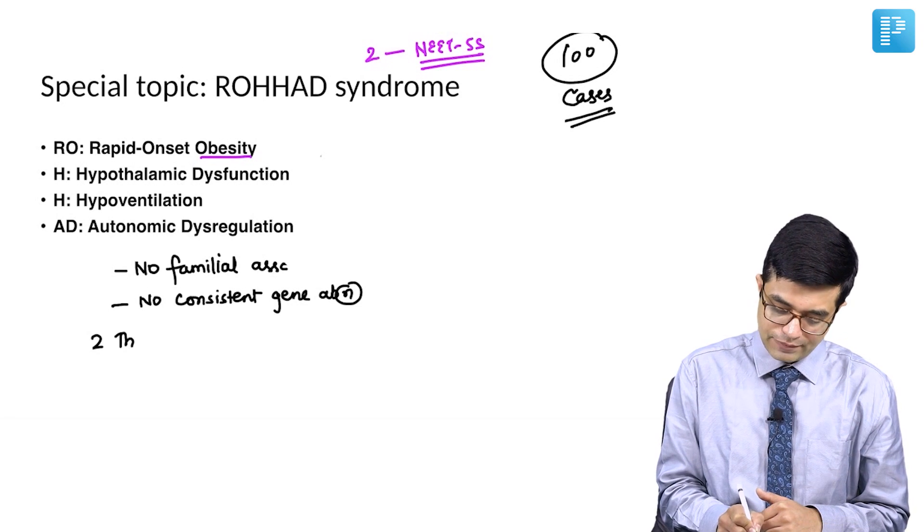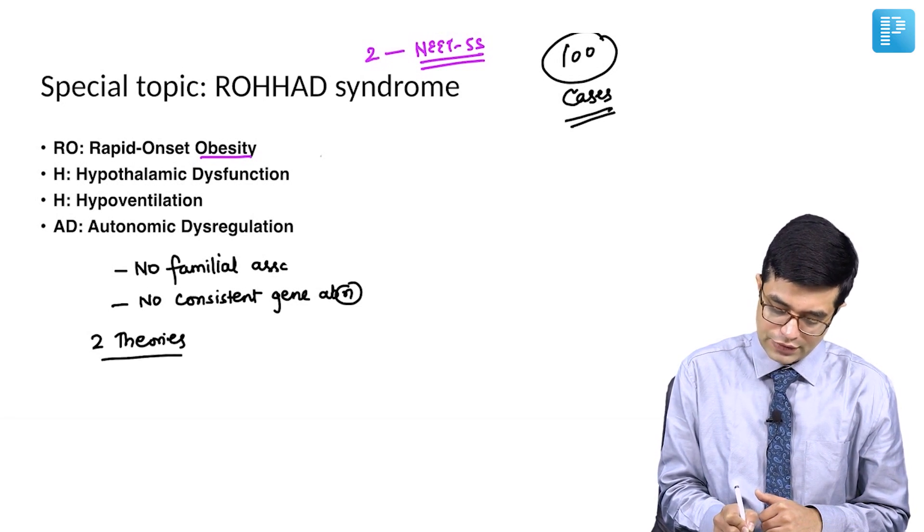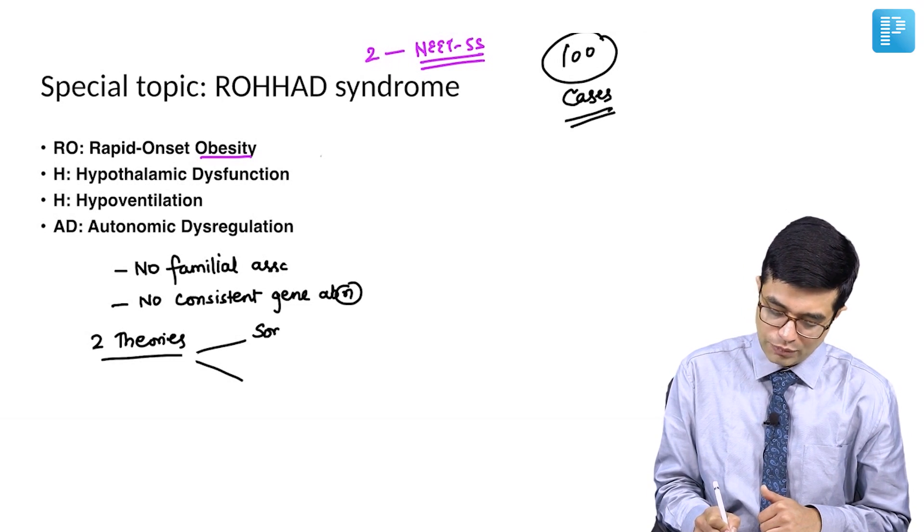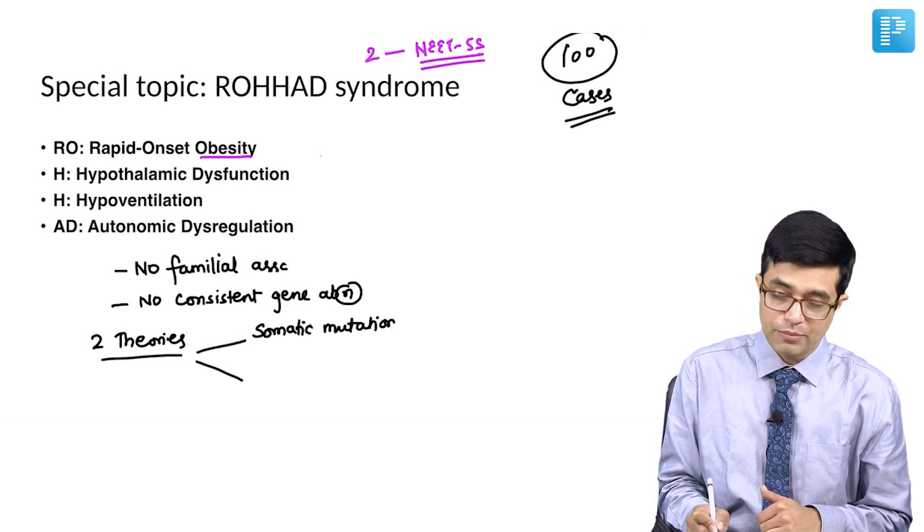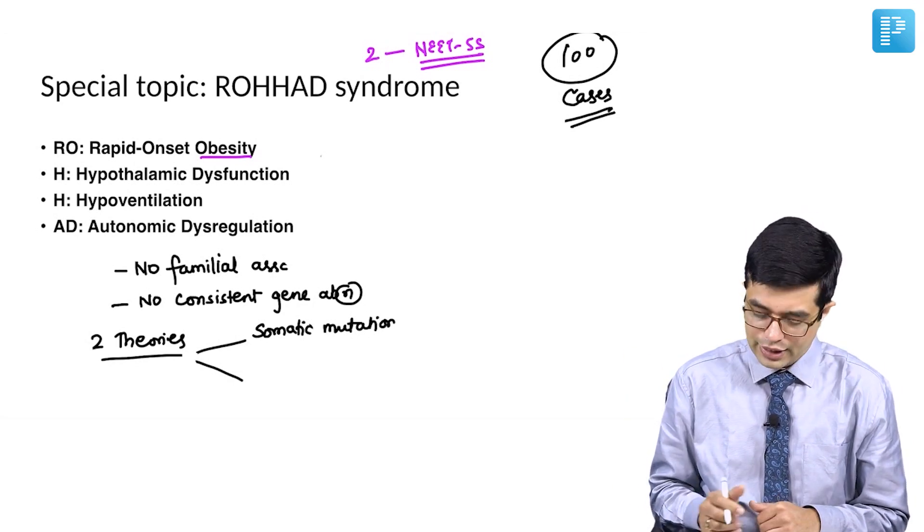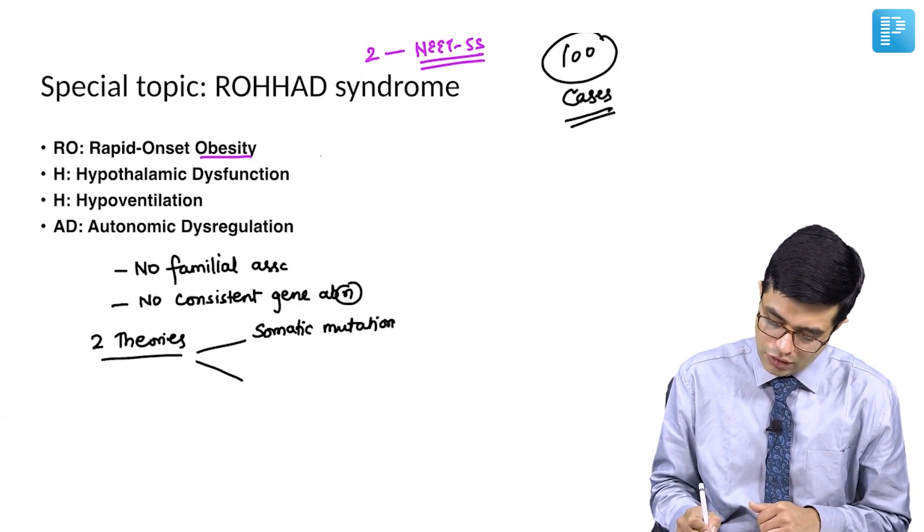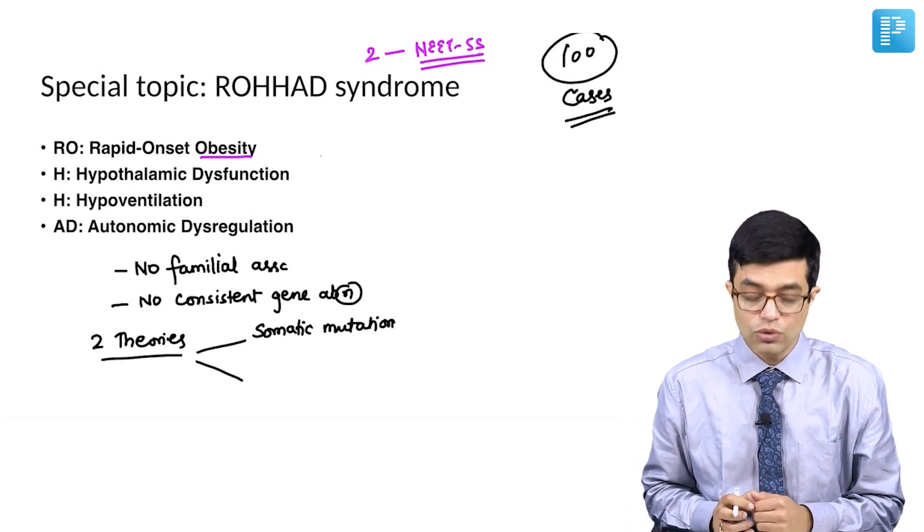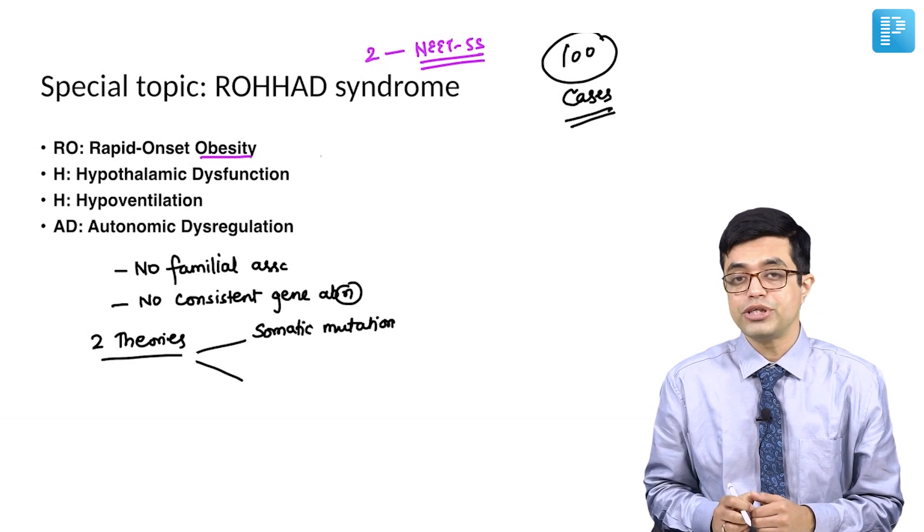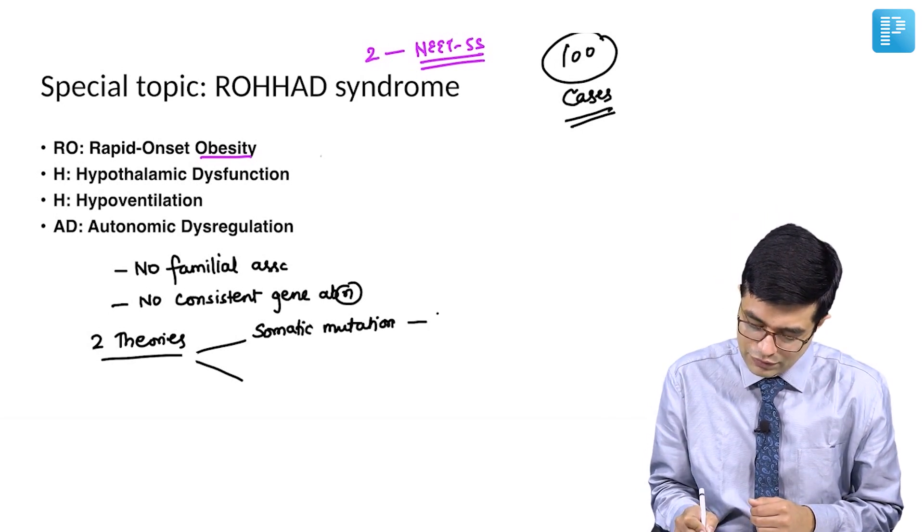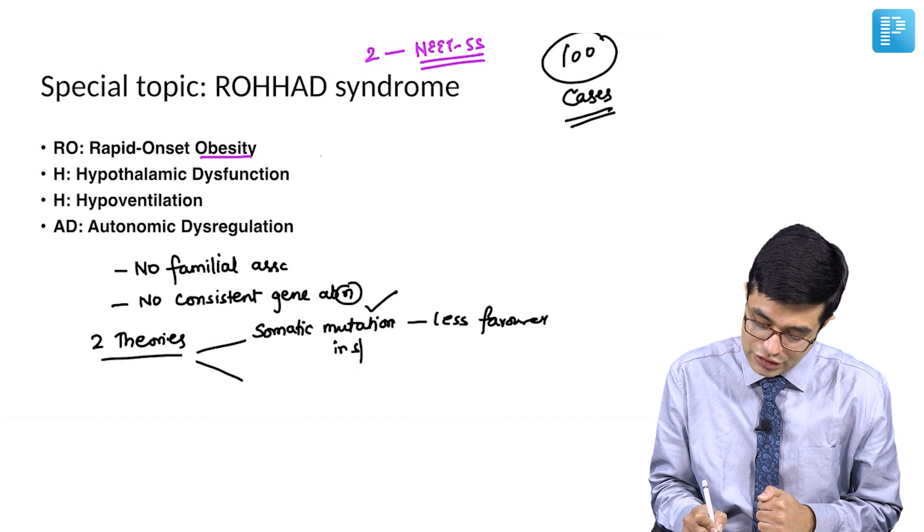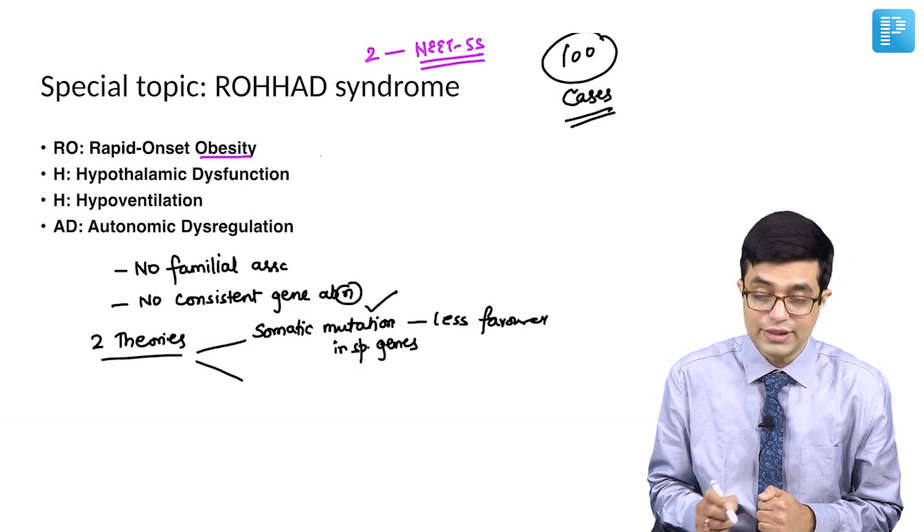Two theories exist why Rohard syndrome happens. One theory says that it is a type of somatic mutation which occurs beyond the germ cell line stage, and it is a somatic mutation in various genes. All of them may have a similar phenotype called Rohard syndrome. But those somatic mutations have not been described, so this is less favored these days. Somatic mutations in specific genes is not favored these days.